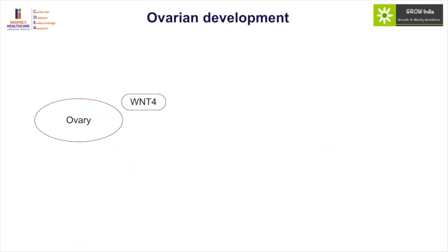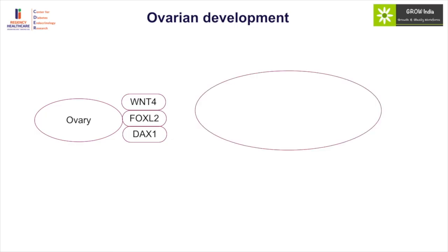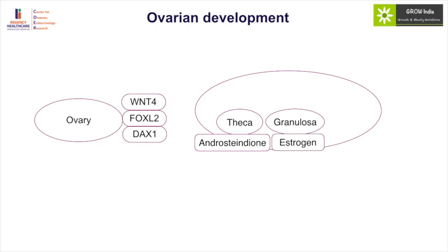Ovarian development also requires a number of genes like WNT4, FOXL2, and DAX1, and then it develops into the theca cell, which produces androstenedione, and the granulosa cell, which under the aromatase enzyme produces estrogen. Deficiency of this aromatase enzyme will result in increased levels of androgens at birth, causing virilization in the mother and fetus, while subsequent estrogen deficiency will result in delayed puberty. Oocytes together with granulosa cells produce AMH, which helps in further development.